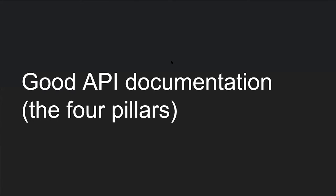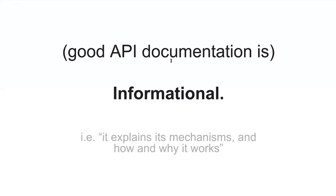Good API documentation has four pillars. The first is informational — good documentation explains the mechanisms and the how and why it works. This means being transparent about underlying systems and abilities, being open about what's happening inside the box. Your API can be a black box to the user, but the more open you are about what the system is doing, the more the user feels in control of the action they're entrusting you with.